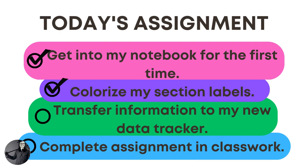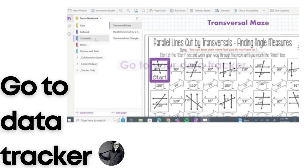You have colorized your section labels. Now it's time to transfer your information from your data chart — your data tracker in your binder — into your new online binder, so you'll need that in front of you. First, go to your data tracker by clicking on the data tab and pulling up the data tracker. If you click the little books icon leaning on each other on the side, or the two expand arrows at the top, that will make it bigger so you can see everything. The data tracker is hard to see all on one page without scrolling, but you can zoom in and out as needed.